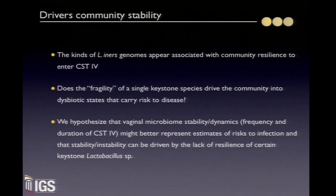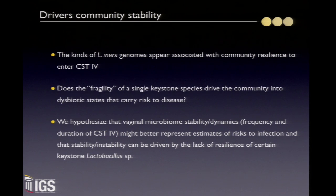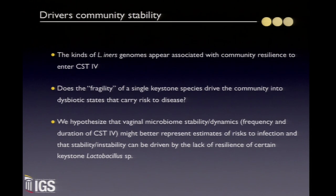We now have the hypothesis that the vaginal microbiome's stability and dynamics — meaning the frequency and duration of community state type 4 — might be a better representation of the estimate of risk to infection. And that this stability and instability can be driven by the fragility of certain keystone Lactobacillus species in the community — potentially driving the entire community into a dysbiotic state that carries risk to disease.